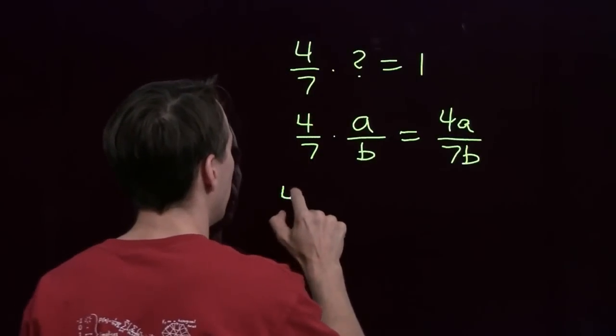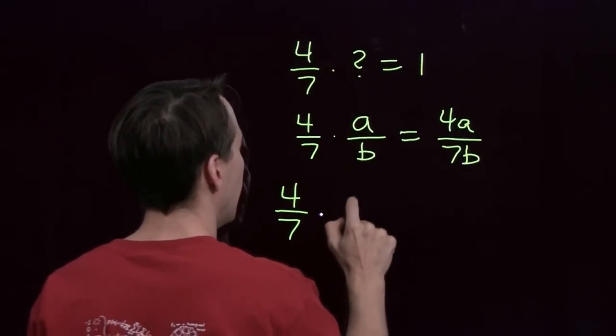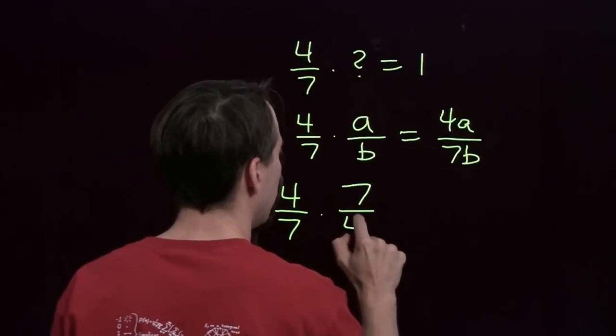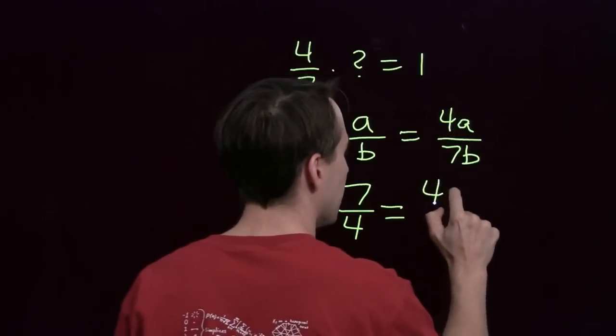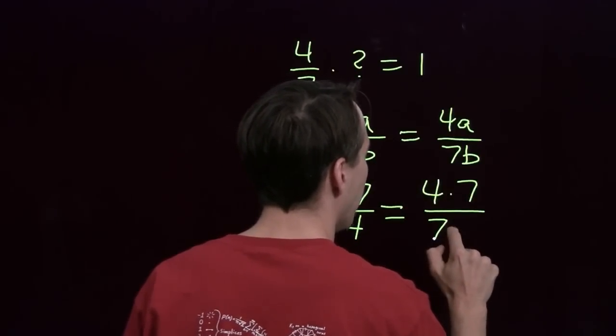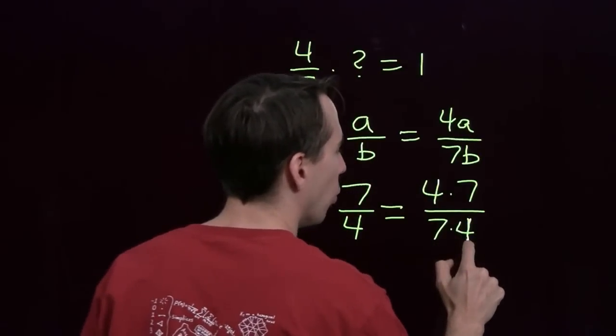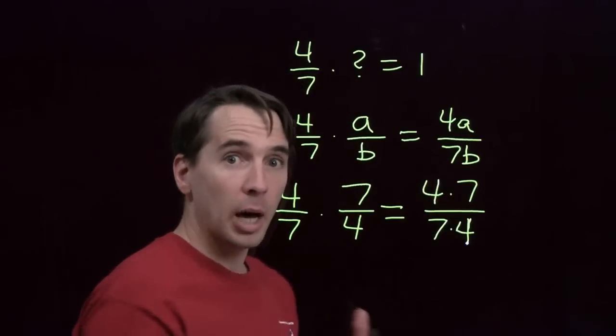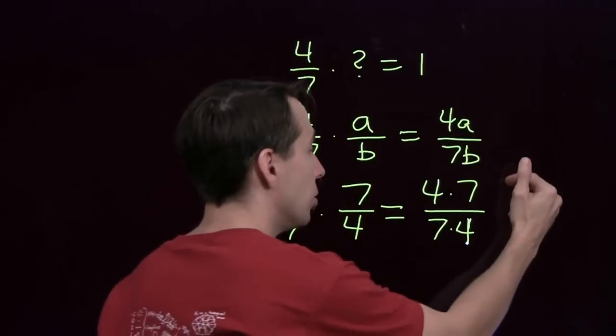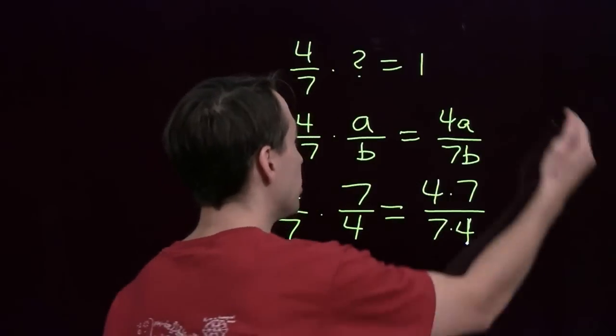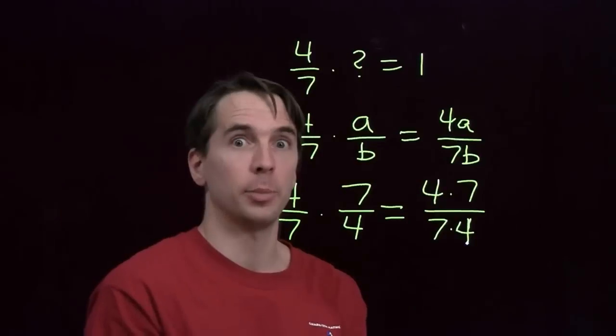Let's check it out. We take 4/7, and we multiply that by 7/4. We multiply the tops, we get 4 times 7. We multiply the bottoms, we get 7 times 4. Both the top and the bottom is the product of 7 and 4, it doesn't matter what order we multiply and we get the same thing. So the numerator and the denominator are the same, so this product is 1, and we found our reciprocal.